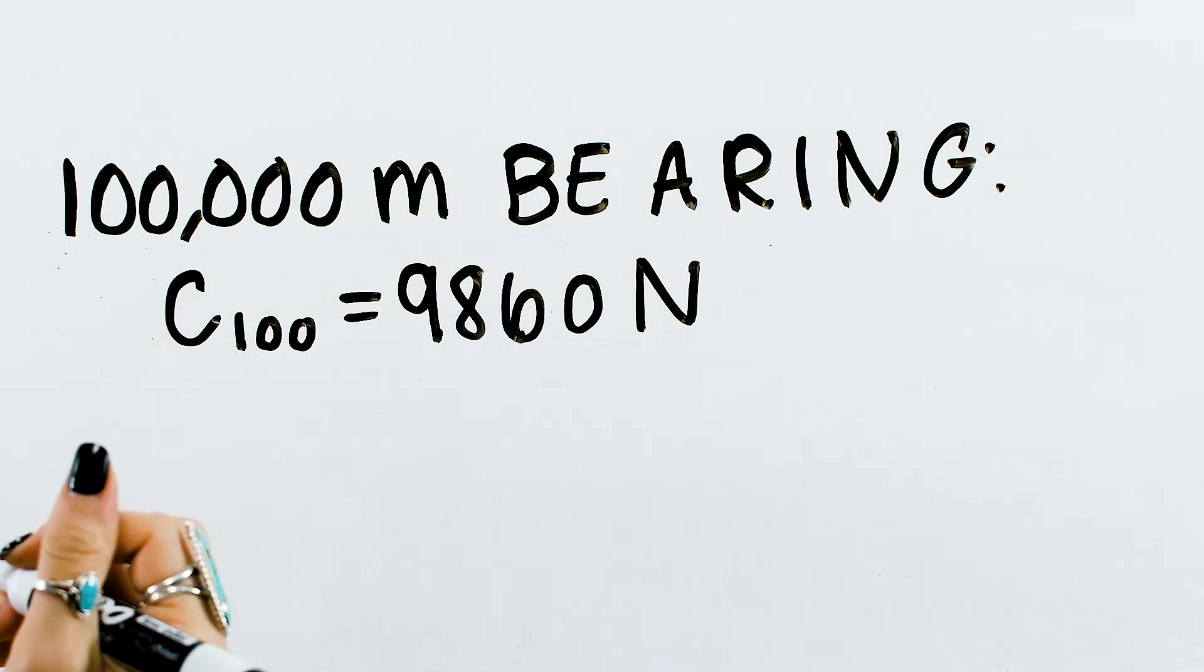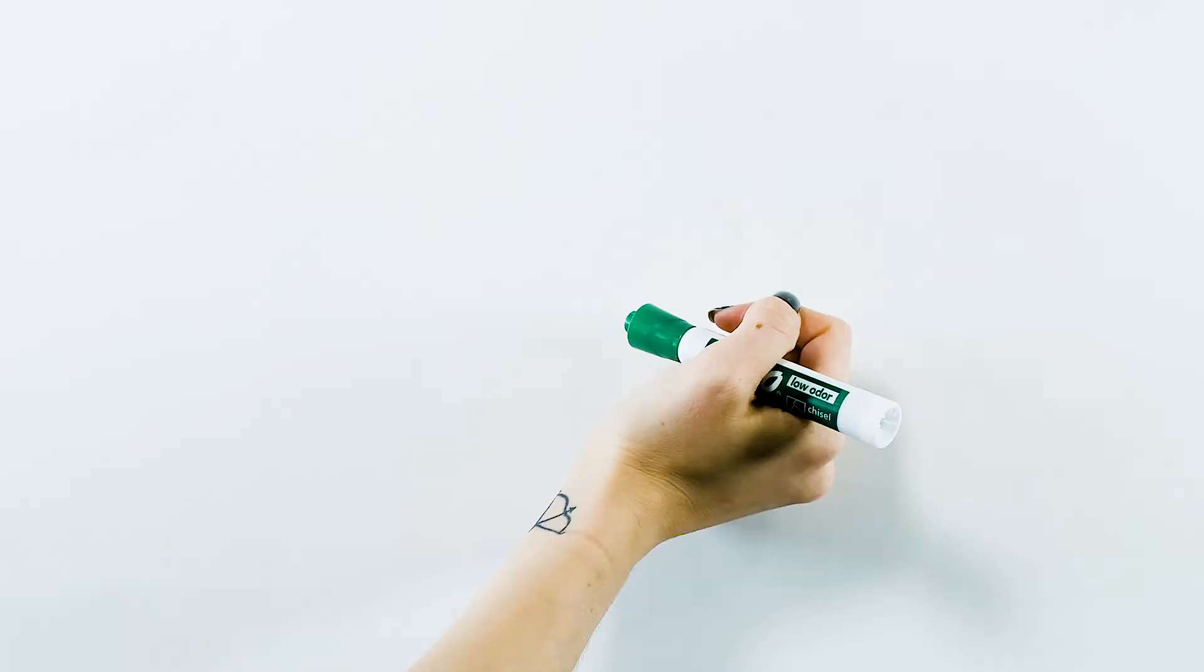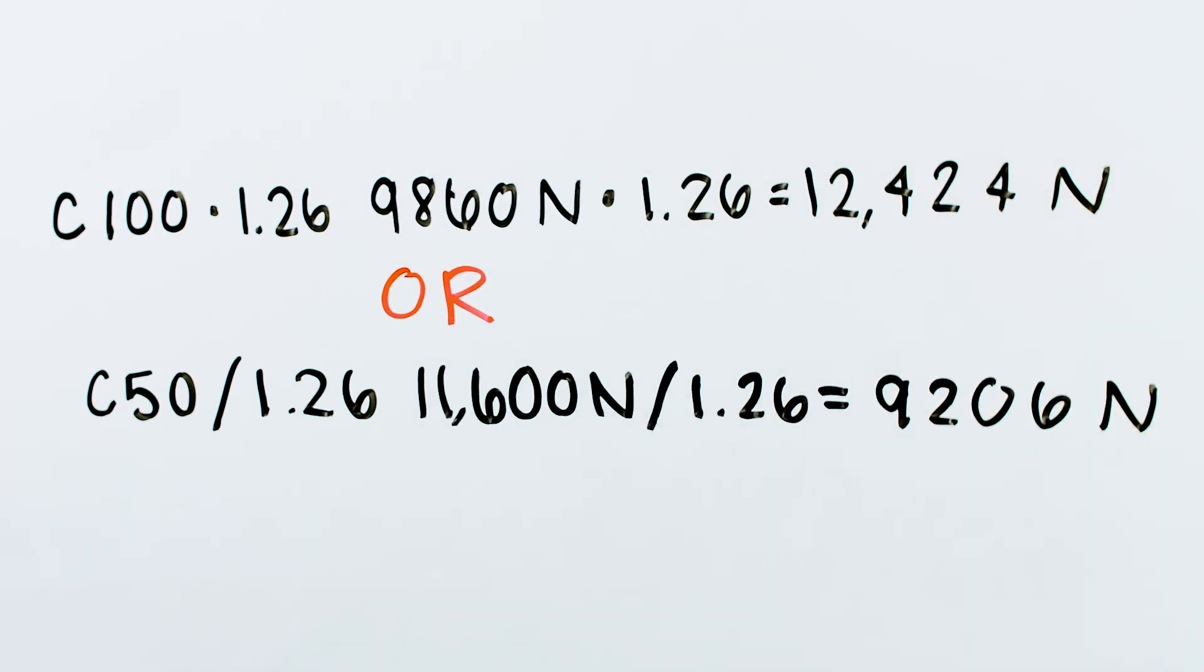If you're making a comparison between a bearing whose capacity is based on 50 kilometers and a bearing whose capacity is based on 100 kilometers, you can do one of two things to make a true apples to apples comparison. Either multiply the load capacity of the 100 kilometer bearing by 1.26 or divide the load capacity of the 50 kilometer bearing by 1.26.